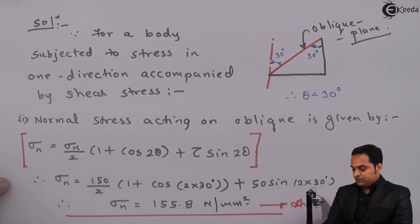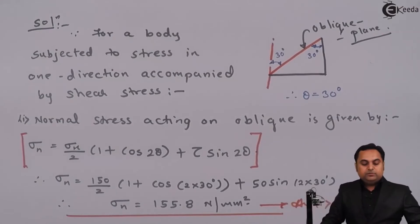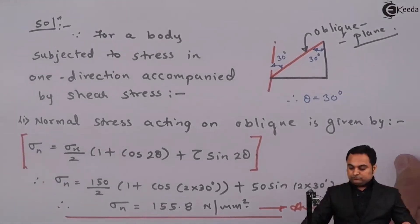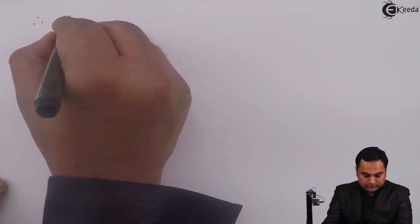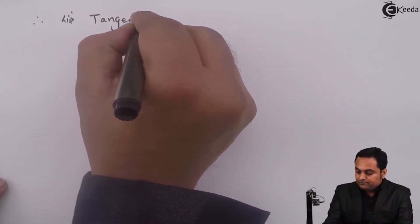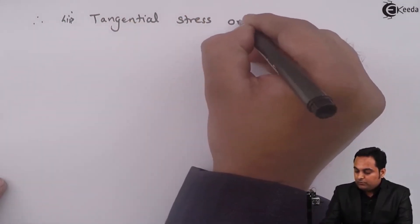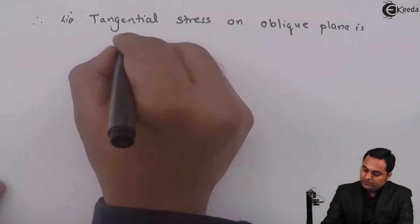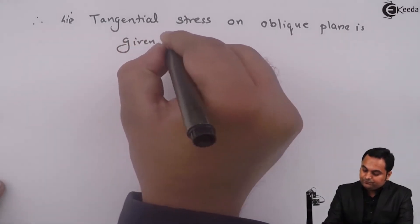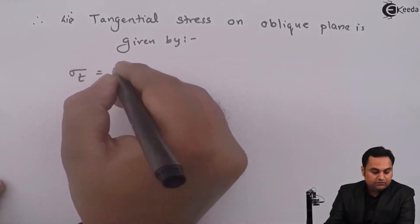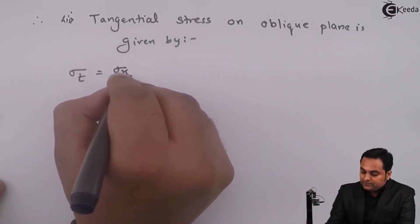After getting the value of normal stress, we'll find the tangential stress. Tangential stress on oblique plane is given by: we have the formula as sigma t equals sigma x by 2.